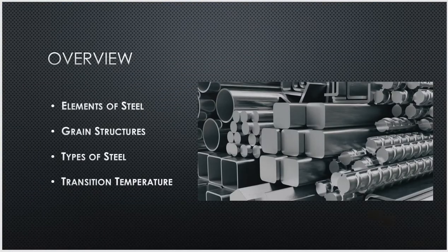Just at a glance, these are some of the things I'm going to be talking about: the elements of steel — what is steel made of — grain structures, how does steel look when you open it up, the types of steel, and transitional temperatures — what happens to steel as it heats up and as we cool it down.